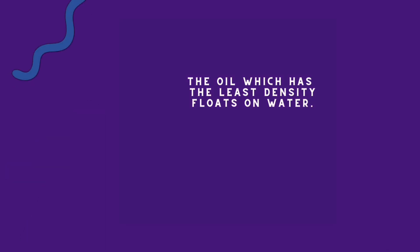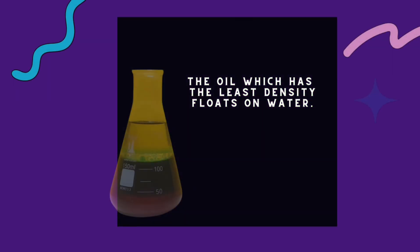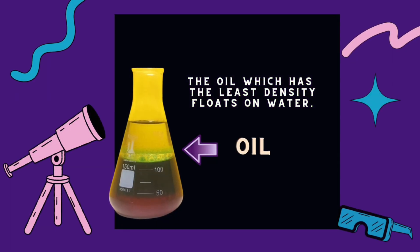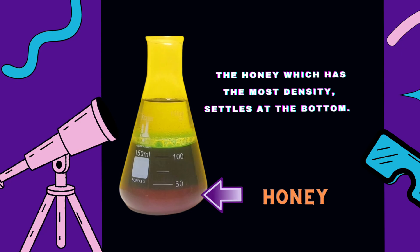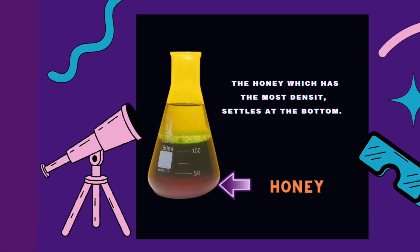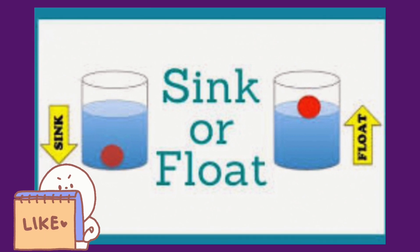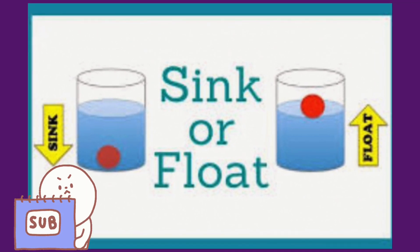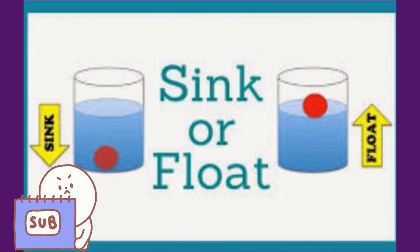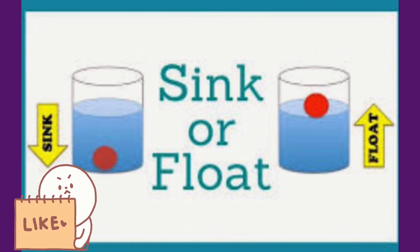As you can see, the oil, which has the least density, floats on the water. On the other hand, the honey, which has the most density, settles at the bottom. Always remember, kids: objects that are more dense than water sink, and objects that are less dense than water float.